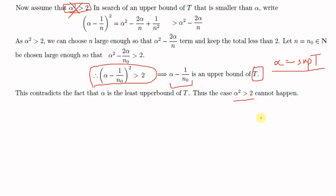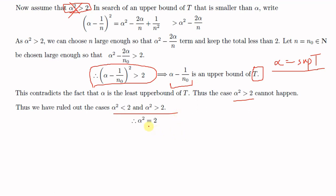We have shown that alpha squared cannot be less than 2 and cannot be greater than 2. So the only possibility is that alpha squared equals 2, giving us alpha equal to root 2, which exists in ℝ. Root 2 exists in ℝ because alpha is the supremum of T, and the supremum exists by the axiom of completeness.